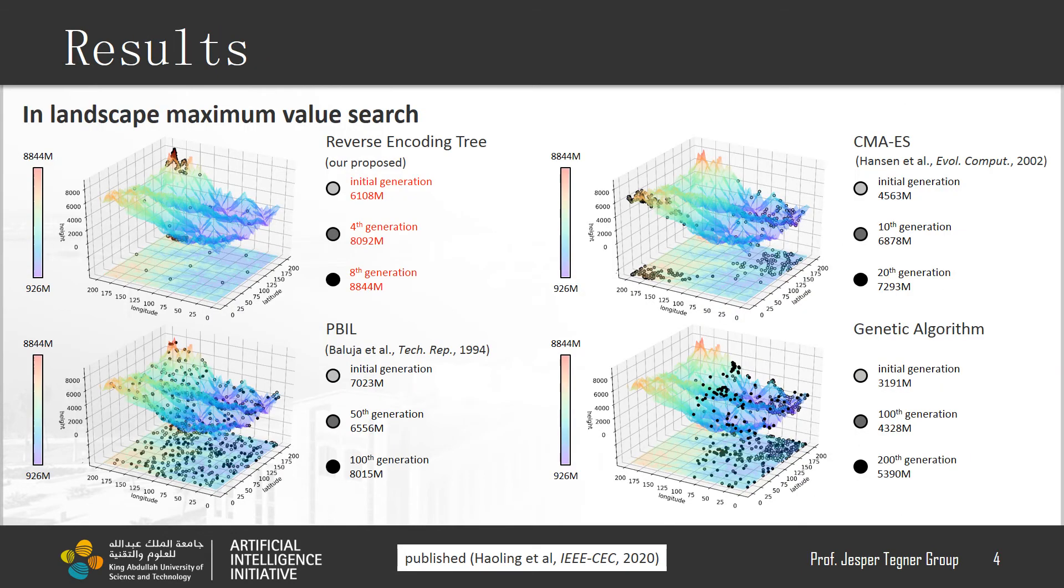Here is a practical landscape evaluation. We discuss how each strategy finds the maximum value in the mountain landscape. Here, population evolution shown by three successive generations. It is clear that reverse encoding tree has faster search speed than others.